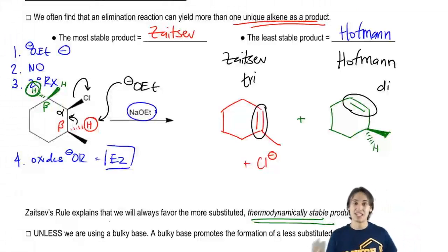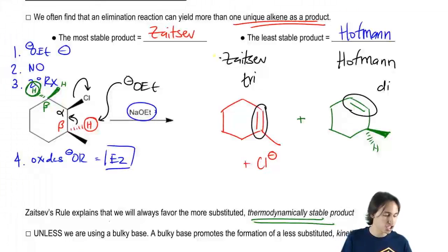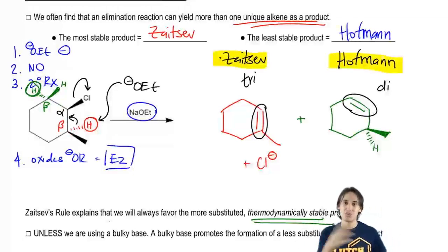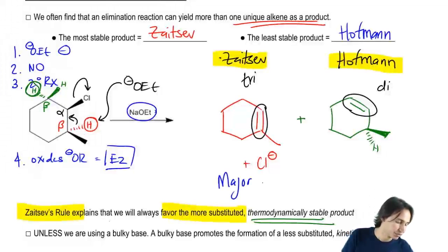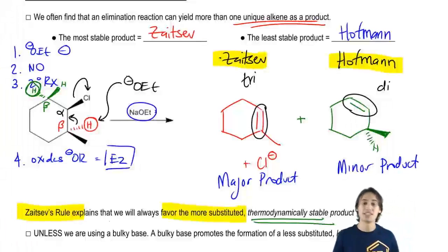Instead of saying less stable, more stable, from now on I'm just going to use the words Zaitsev and Hoffman—they're synonyms. Now we have to figure out which one is major and which one is minor. Which one am I going to form in higher amount? Zaitsev explains that I'm going to favor the Zaitsev product. So this is my major product and this is my minor product. Does that mean I only get one? No, I still get both, but I'm going to get a lot more of the red and a lot less of the green.